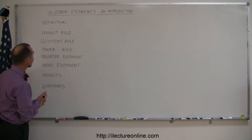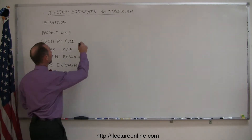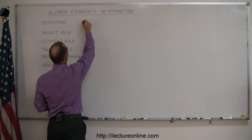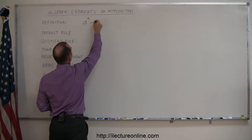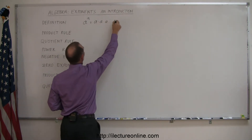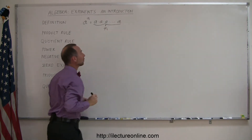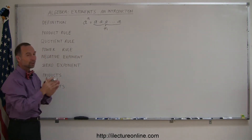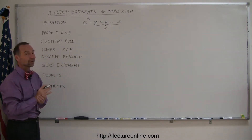Definition of exponents. Let's say that we have some number a raised to the nth power, that is equal to a times a times a — however many there are, n number of times. So when you put n number of a's together and multiply them, that's the same as saying a to the n.